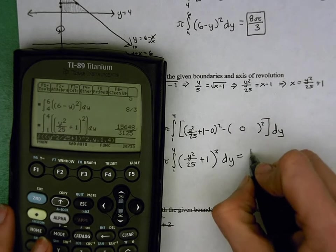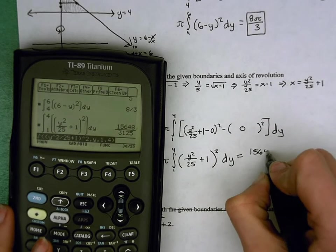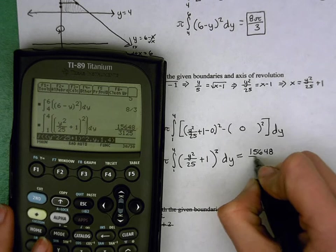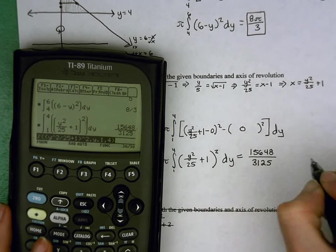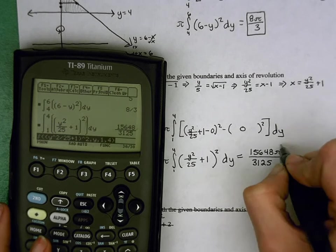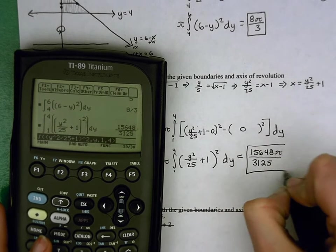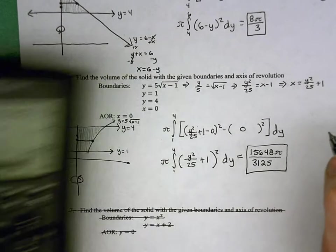And we get 15, 6, 4, 8 over 31, 25, and then don't forget the pi. And there's my answer.